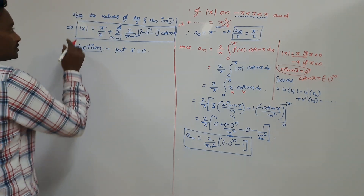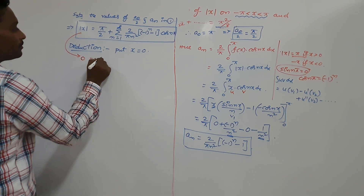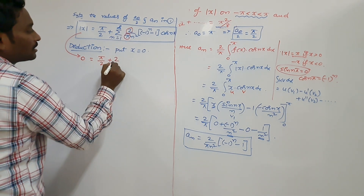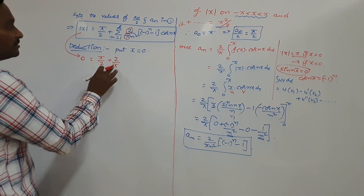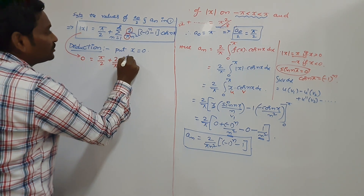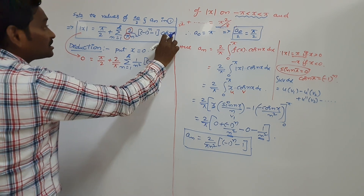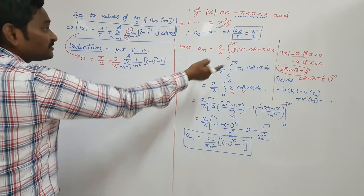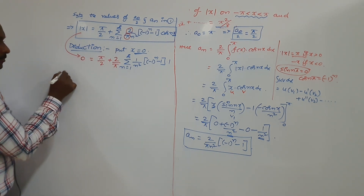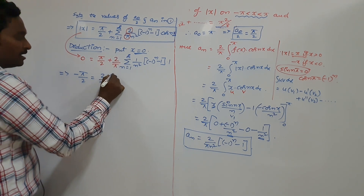By replacing x equals 0, the left side becomes modulus of 0, which is 0. The right side: pi by 2 plus 2 by pi — the constant term outside the summation — times summation n equals 1 to infinity of 1 by n squared times [(-1)ⁿ minus 1] into cos 0. Since cos 0 equals 1, there is no trigonometric term remaining, just 1. Taking pi by 2 to the left side, we get minus pi by 2 equals 2 by pi, and we expand the series.